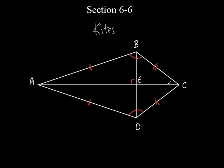Look at angle A — it is between the two equal sides. Angle C is between the two equal sides. It's those two angles which are not equal to each other. So which angles are equal? It's the angles between the two unequal sides. That's angle B and angle D — those are the ones that are actually equal to each other.